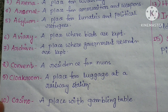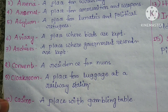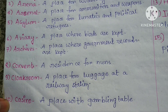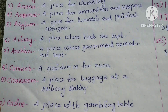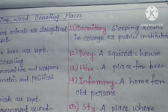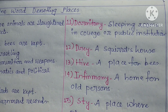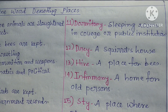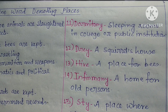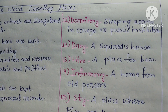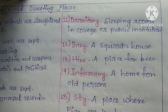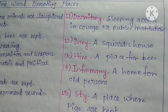Casino — a place with gambling tables. Casinos are especially very famous in European countries, and the term casino is very familiar there. Dormitory — sleeping rooms in a college or public institution.